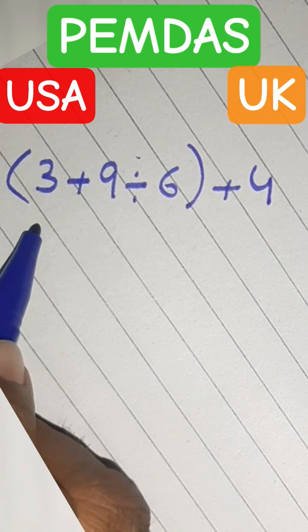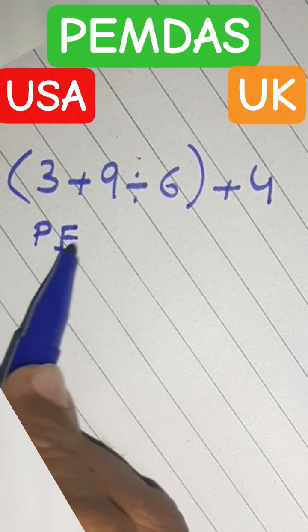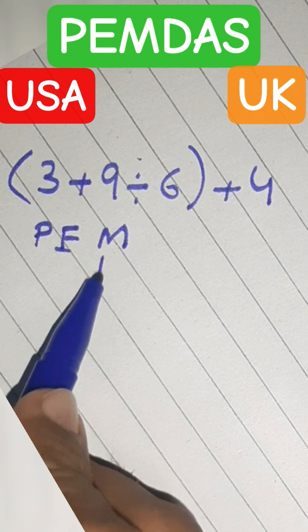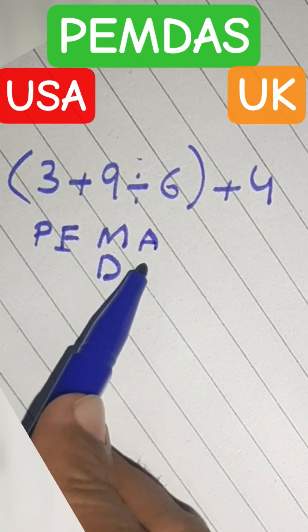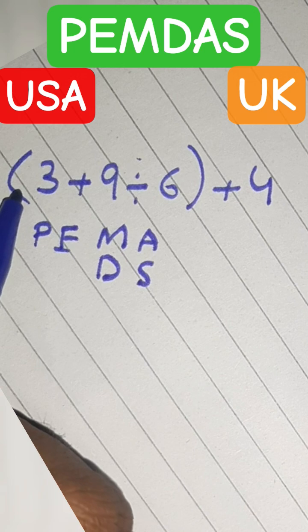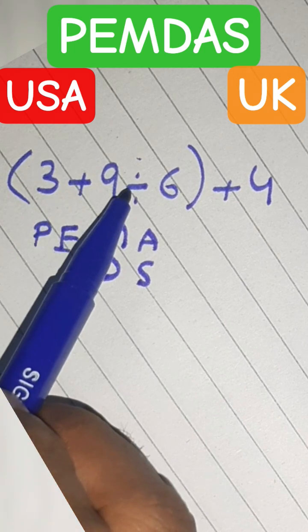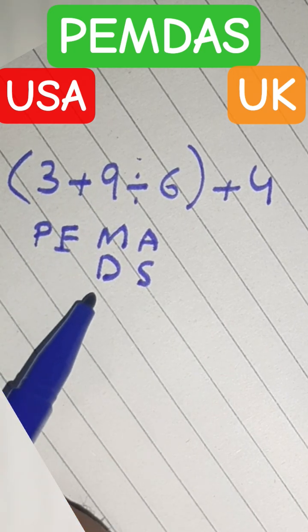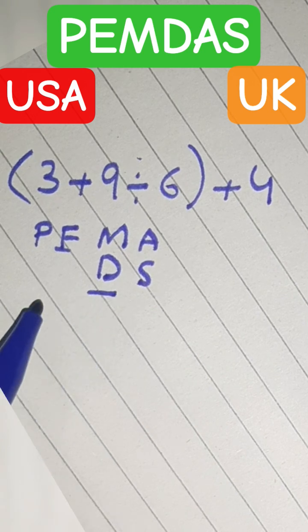To follow order of operations, first we solve parenthesis, then exponent, then multiplication or division, same like addition and subtraction. In this expression, one is parenthesis, and then inside the parenthesis addition and division. So according to order of operation, first we solve division.